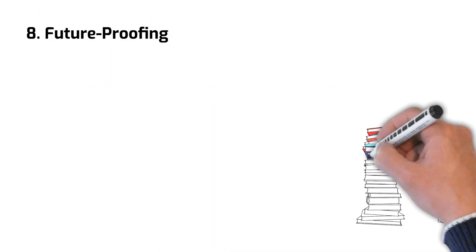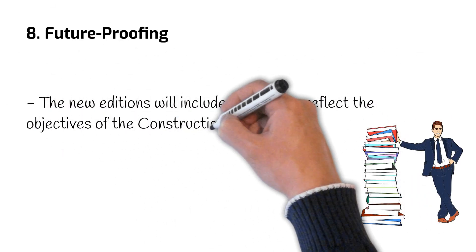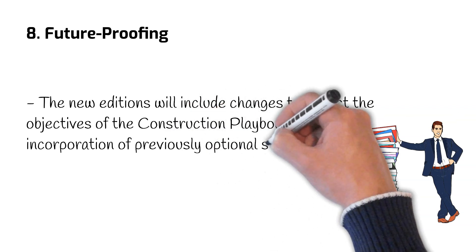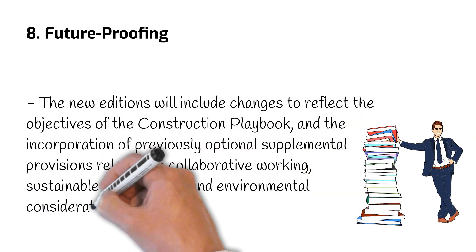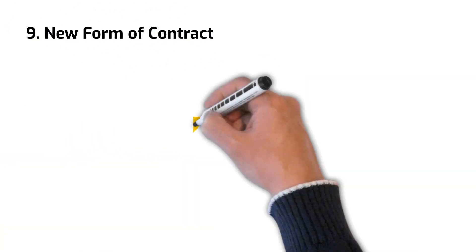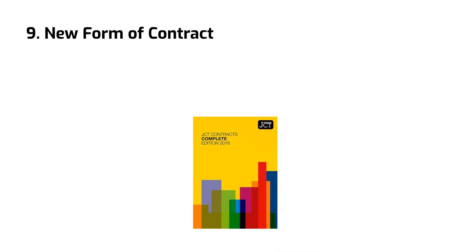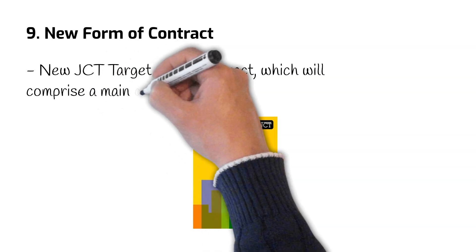Number 8: Future-proofing. The new editions will include changes to reflect the objectives of the Construction Playbook, and the incorporation of previously optional supplemental provisions relating to collaborative working, sustainable development, and environmental considerations into the main contract. Finally, number 9: New Form of Contract. It has been announced that JCT 2024 will introduce a new contract family, the JCT Target Cost Contract, which will comprise a main contract, subcontract, and a guide.